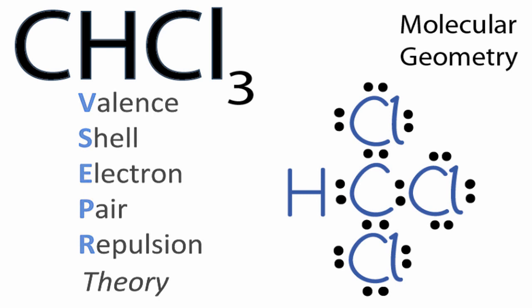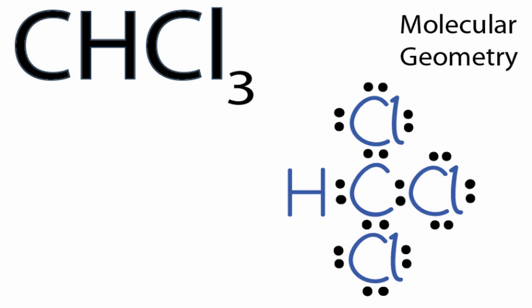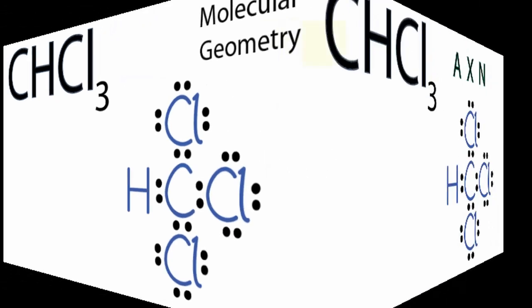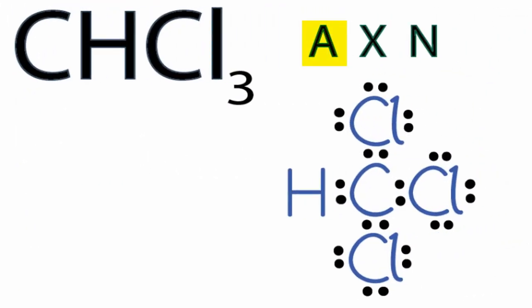But we can also use the AXN notation to make sure we have the correct molecular geometry for CHCl3. A, that's the carbon in the center. X, that's the number of atoms bonded to the carbon. We have three chlorines and one hydrogen, so we have four atoms bonded to that carbon.